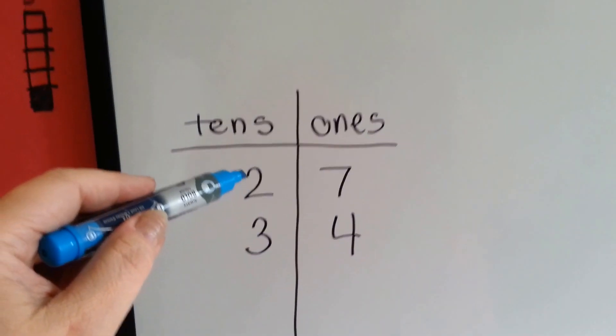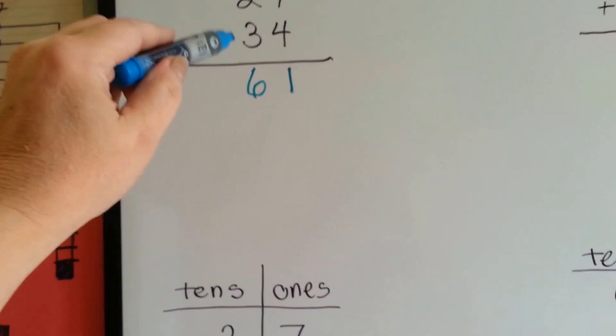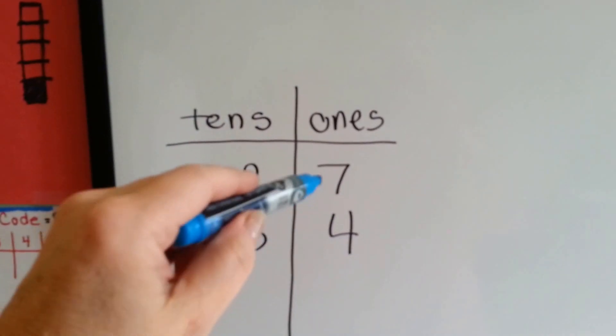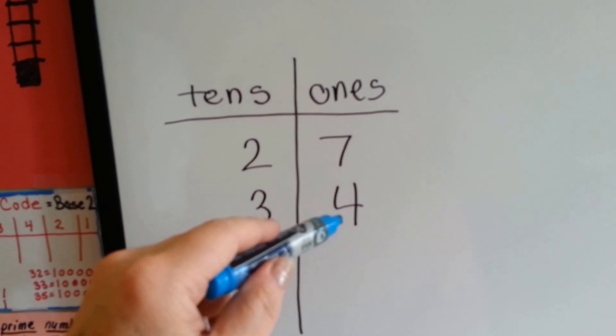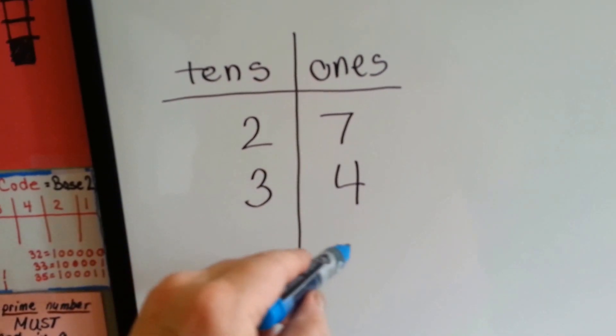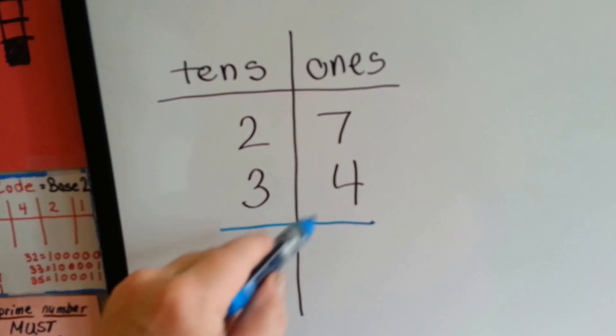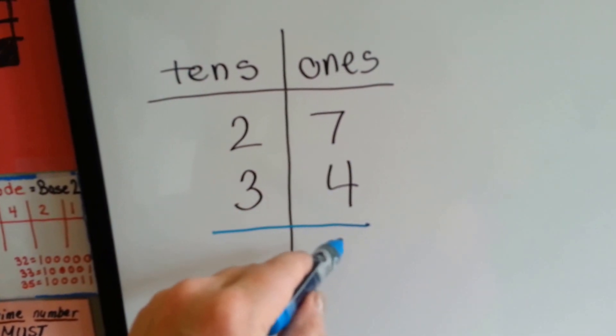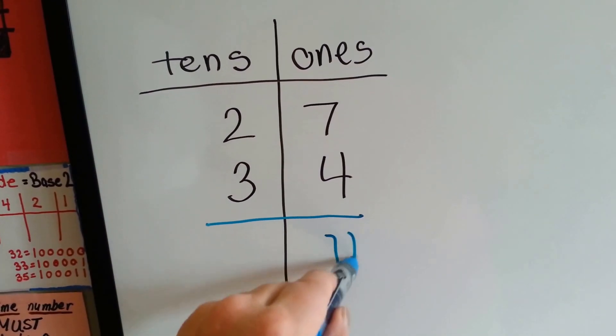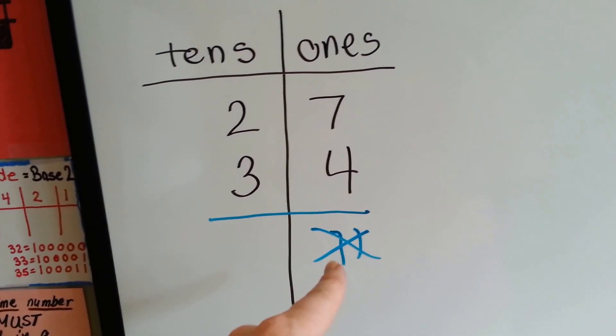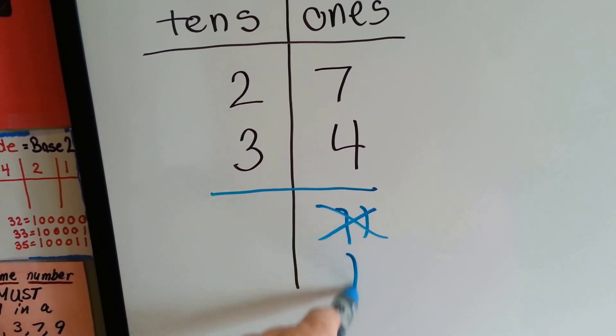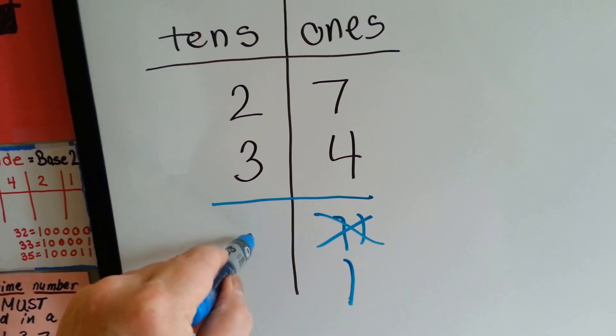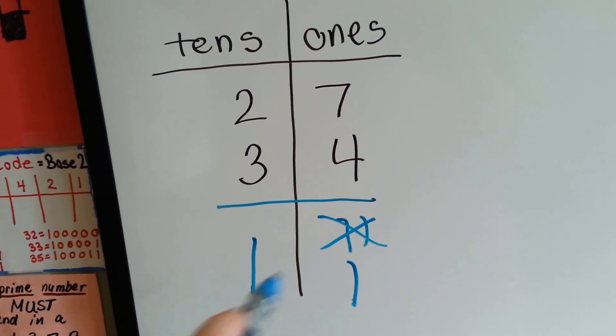Here it is again, same thing. 27 plus 34. We have 7 ones and 4 ones. That makes 11 ones. So what happens is we end up putting one of them. You can't have 11 and put it there. You can't do that. You can only have one digit. So we're going to put the 1 here and the other 1 here. See? 11.